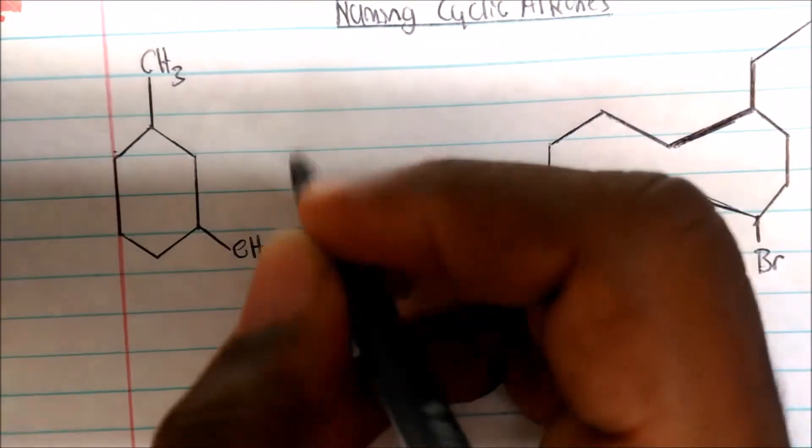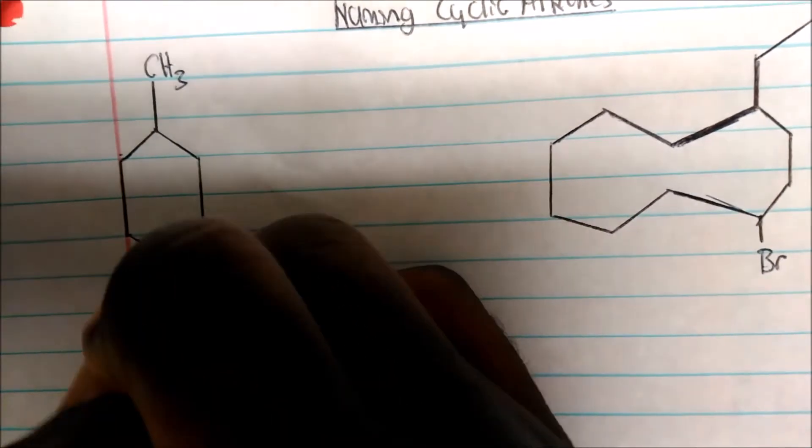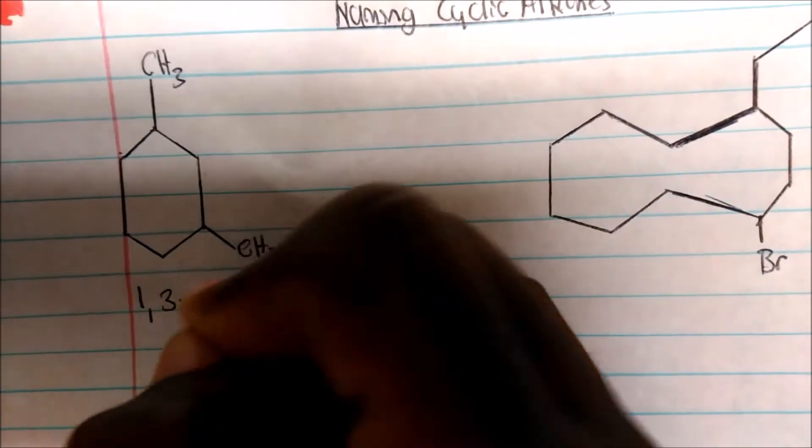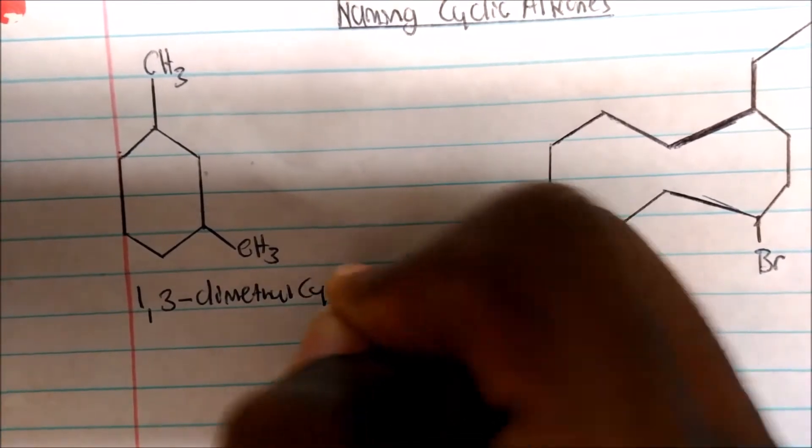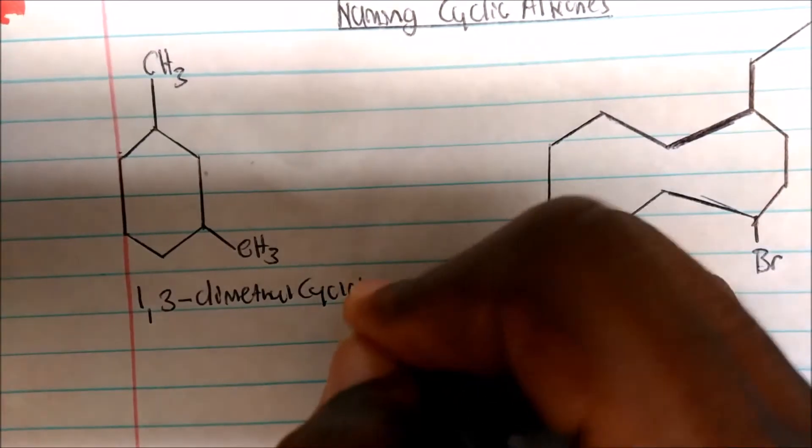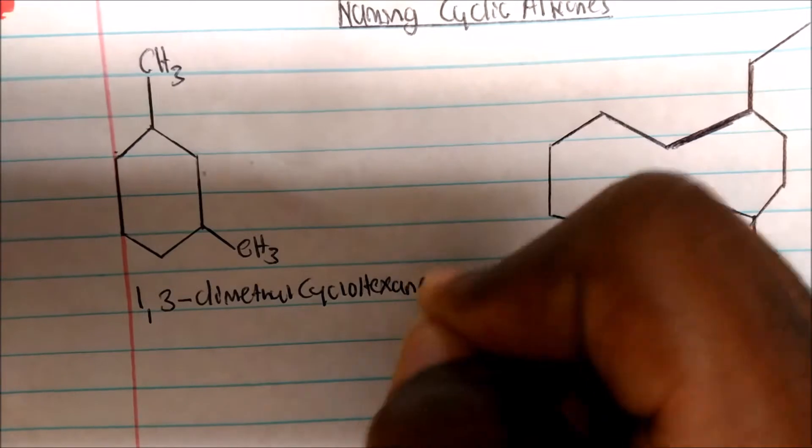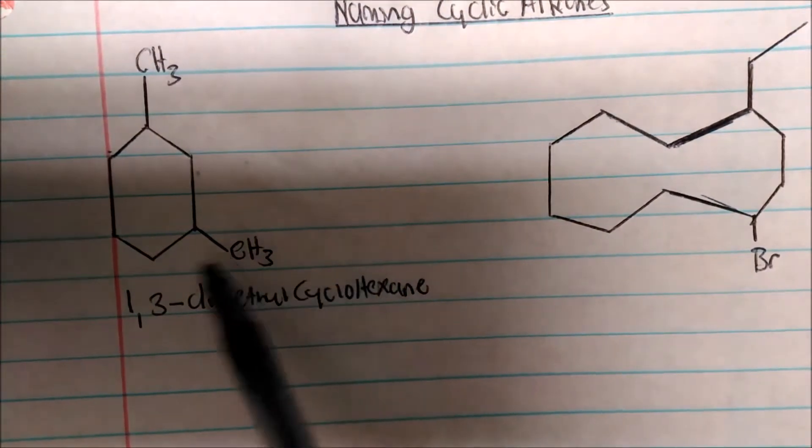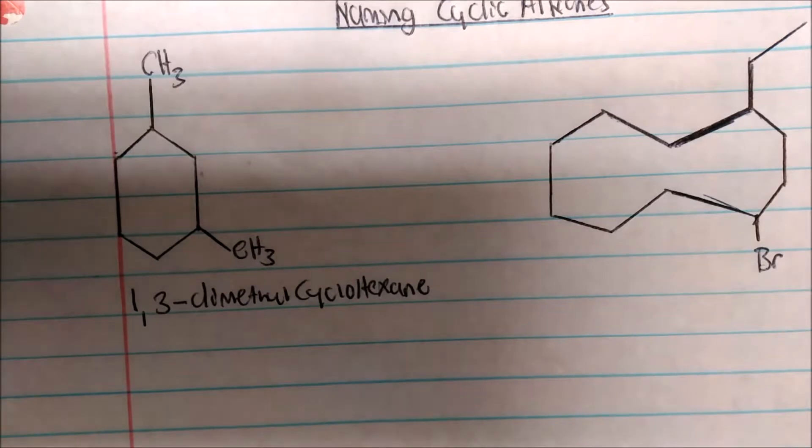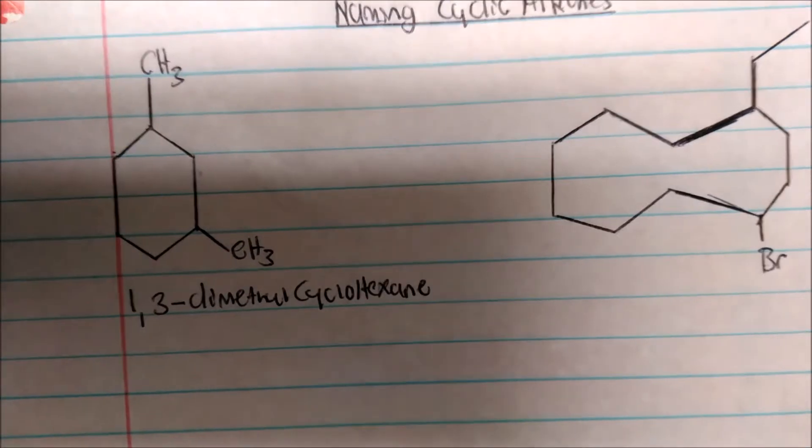So again, squashing everything together, this will be one, three, dimethylcyclohexane. All we're doing is adding that cyclo in front of that hexane to be a parent, and then just naming our substituents.